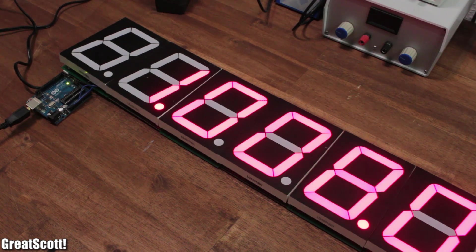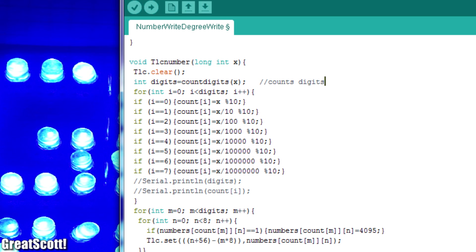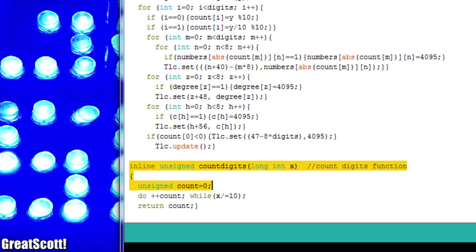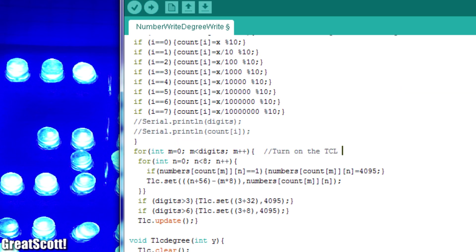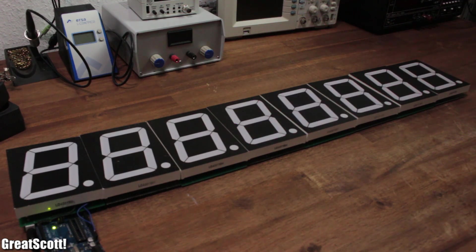Now in order to present large numbers we need a bit of programming. So I created a function which firstly counts the number of digits in my entered integer, stores each individual one in one spot of an array and then switches on the necessary outputs of the TLC to create the complete number on the display.